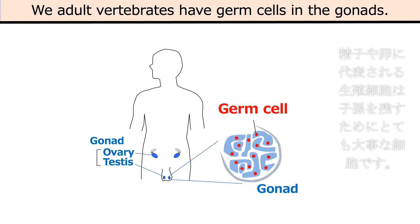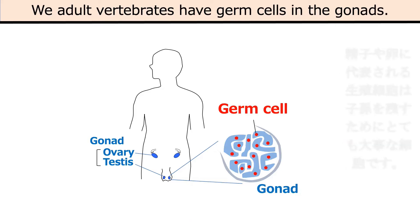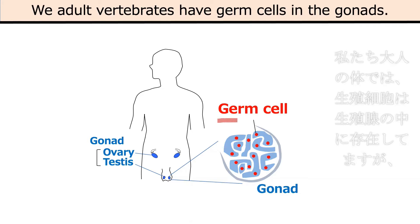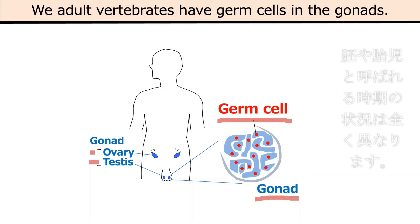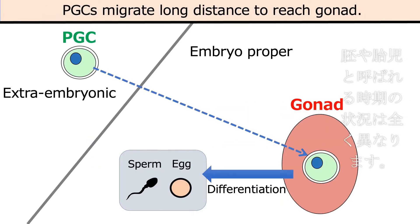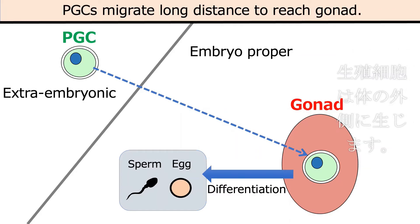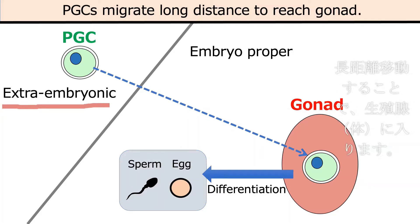Germ line cells including sperm and egg are important cells to transmit genetic information to the next generation. The germ cells which adult vertebrates have are sperm or eggs in the gonad — a specific reproductive organ, testis or ovary. But the embryonic situation is quite different: there are no germ cells in the body at first. They are first born outside of the body, then migrate a long way to the gonad.